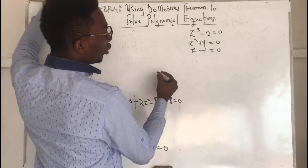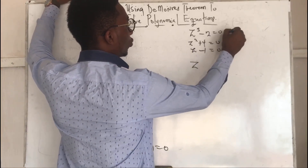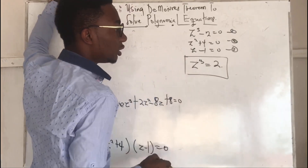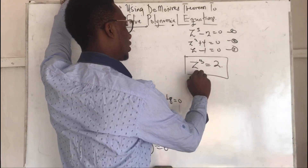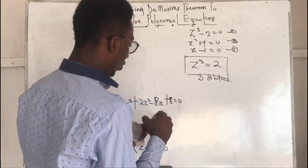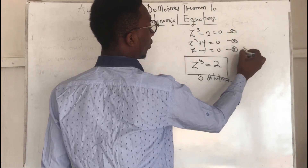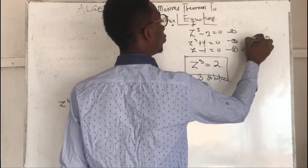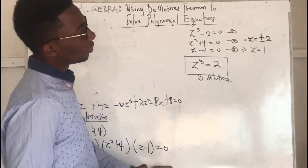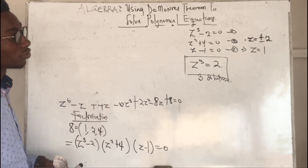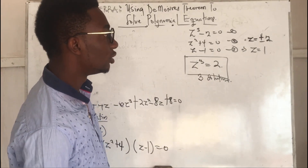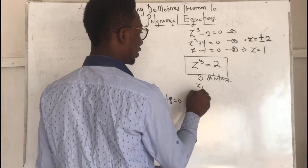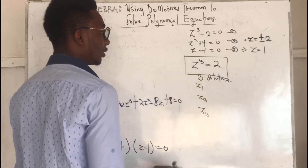From these three equations: equation 1 gives z³ = 2, which must have 3 solutions; equation 3 gives z = 1; and equation 2 gives z = ±2i (the imaginary solutions). This first equation alone must yield 3 solutions — we need z1, z2, and z3 from it.